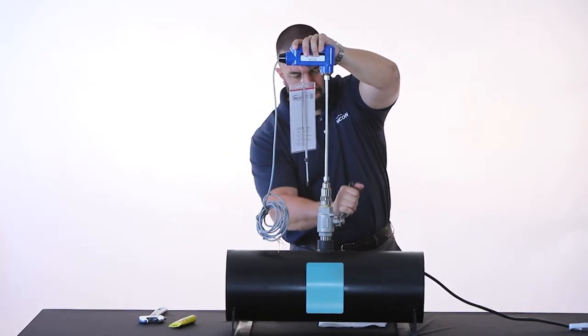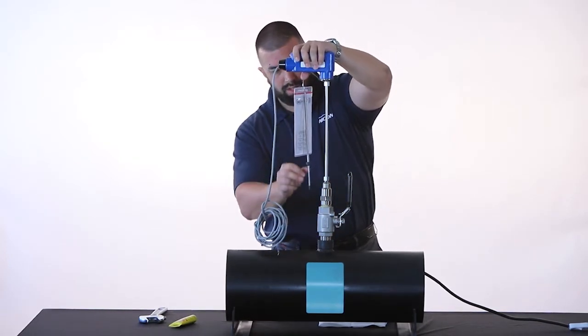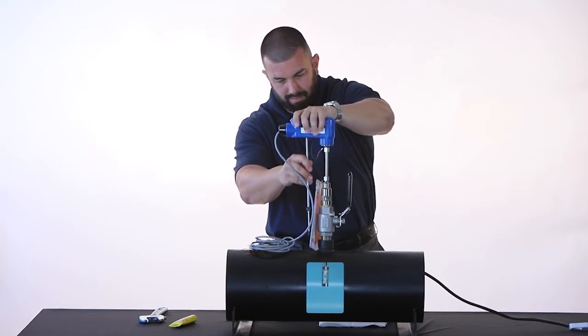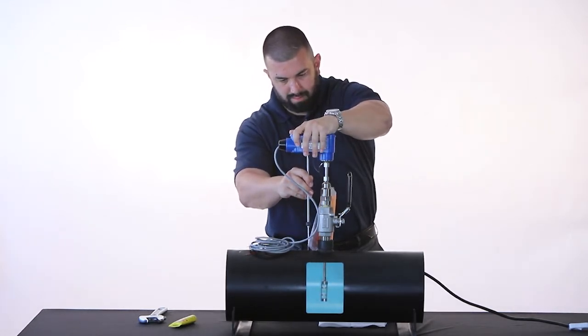Place the insertion depth gauge tip on top of the pipe, piercing through any insulation if needed. Gently push the flow meter down into the pipe until the other end of the insertion gauge touches the underside of the electronics housing.